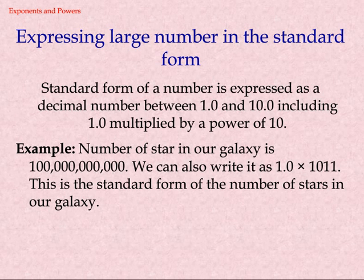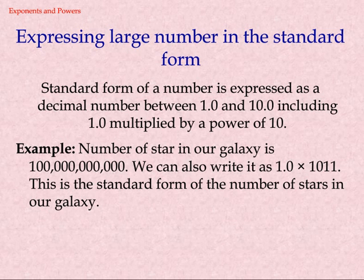Expressing large numbers in the standard form. Standard form of a number is expressed as a decimal number between 1.0 and 10.0 (including 1.0) multiplied by a power of 10. Example: the number of stars in our galaxy is 100,000,000,000. We can also write it as 1.0 × 10^11. This is the standard form of the number of stars in our galaxy.